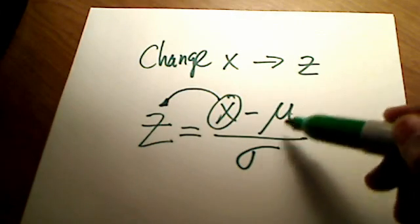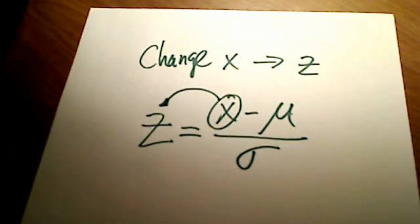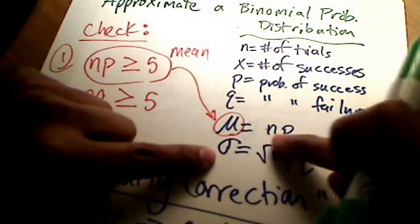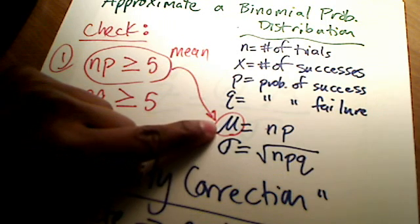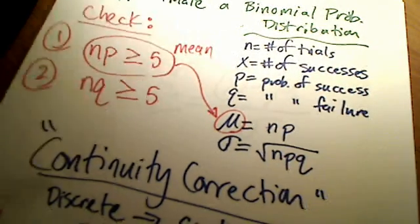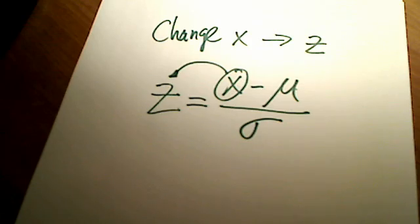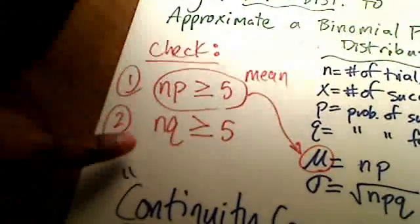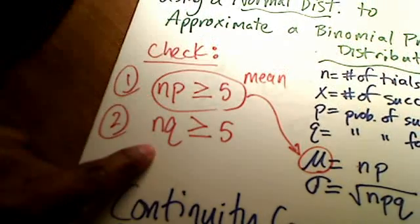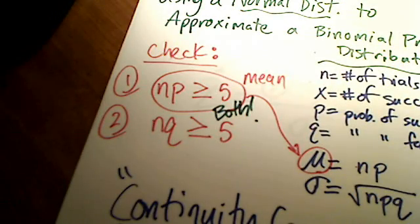Where are the mean and standard deviation coming from for our binomial probability distributions? We can find the mean as n times p, and the standard deviation as the square root of n times p times q. And remember, you can only use this if both n times p and n times q are greater than or equal to 5 — both products must be true, not just one of them. Hope that helps.